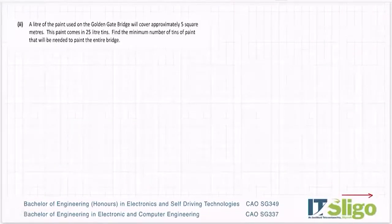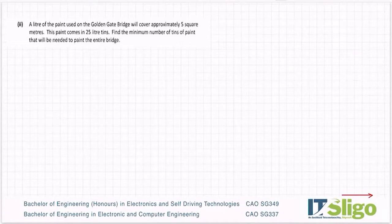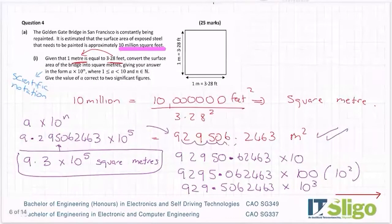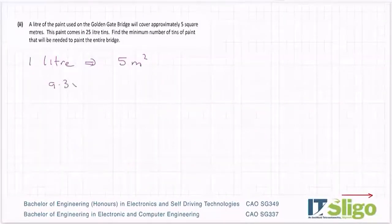Part B then. A litre of the paint used on the Golden Gate Bridge will cover approximately 5 square meters. The paint comes in 25 litre tins. Find the minimum number of tins of paint that will be needed to paint the entire bridge. So a litre of paint covers 5 square meters. So I think the first thing I'll do is figure out how many litres of paint I need. So one litre. That took me a minute to look at that to figure out which way is the right way to go. So let me go back to my number.